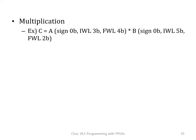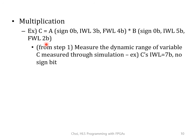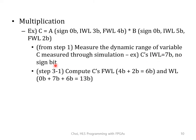Now let's look at multiplication. Suppose we are multiplying a variable with no sign bit, IWL 3 bits, FWL 4 bits, times a variable with no sign bit, IWL 5 bits, and FWL 2 bits. We assume from step 1 that we already know C's IWL, and that it has no sign bit. Since this is a multiplication, we can calculate C's FWL by combining the FWL of A and B — 4 bits and 2 bits — so C's FWL is 6 bits. With IWL known to be 7 bits, the word length of C is 7 plus 6, so 13 bits.